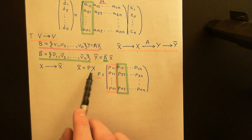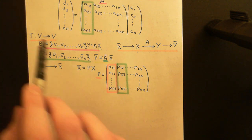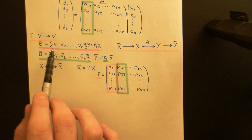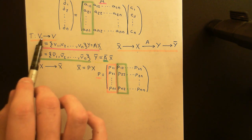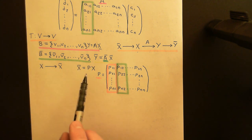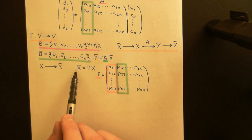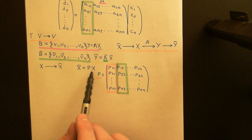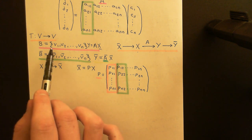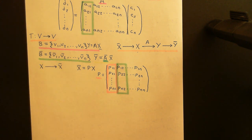So if you have a vector in your vector space V whose coordinates with respect to basis B are x, there is this matrix P that you can multiply the coordinate vector by to turn it into the coordinate vector with respect to basis B-bar.